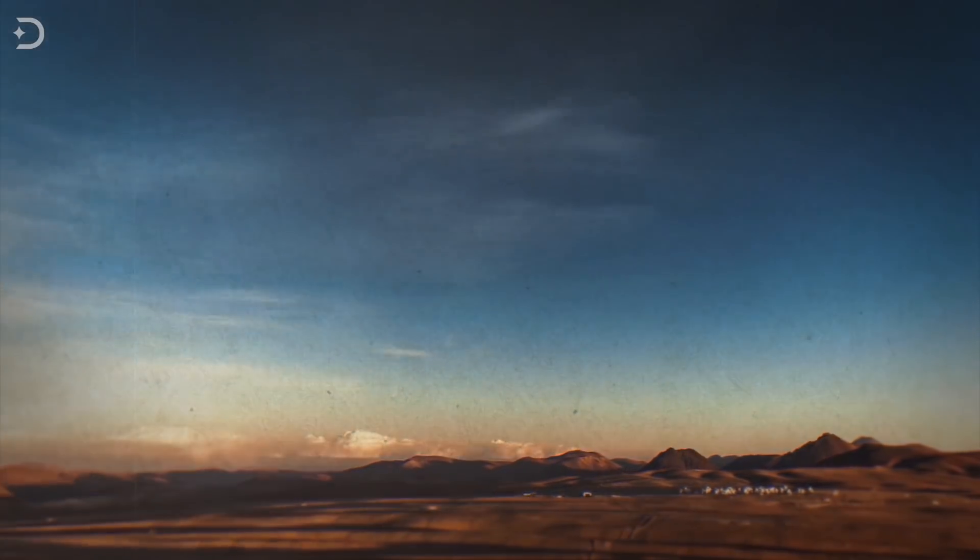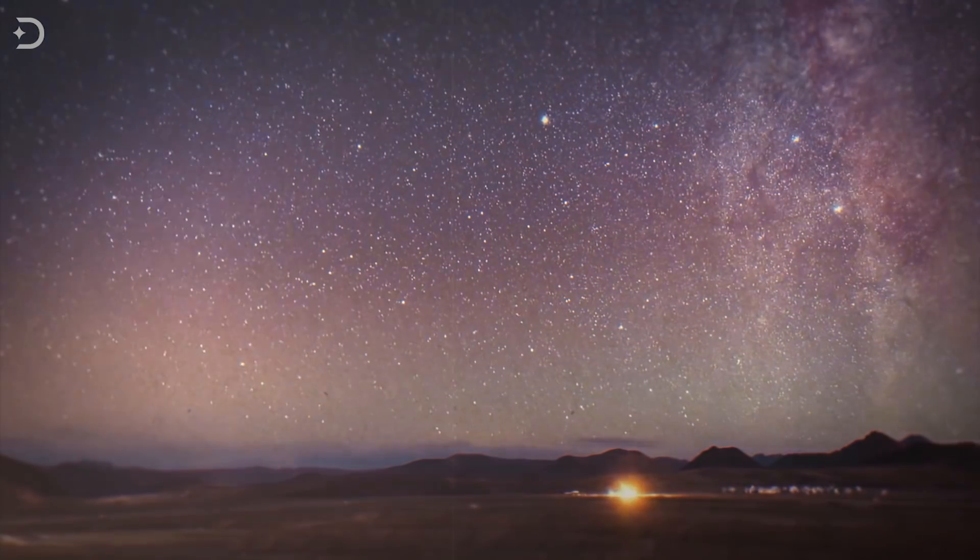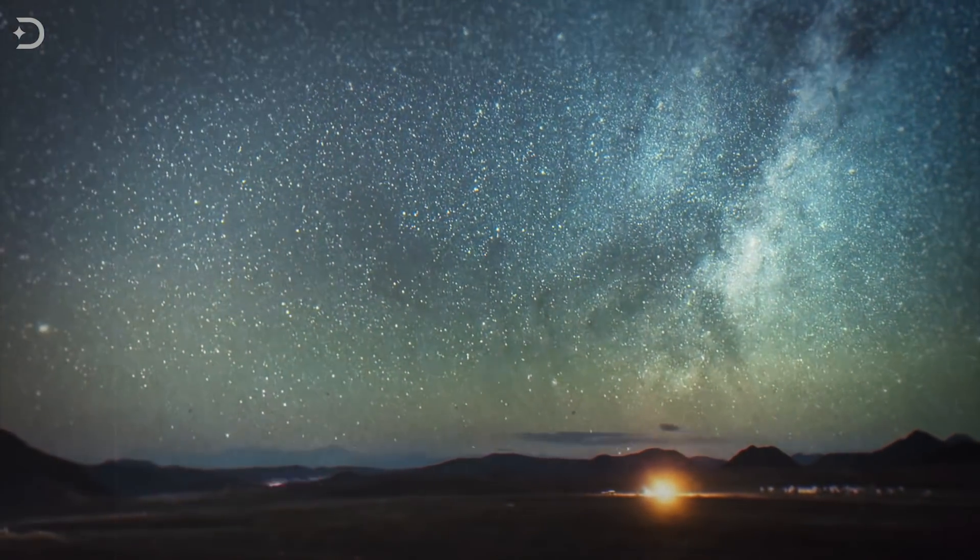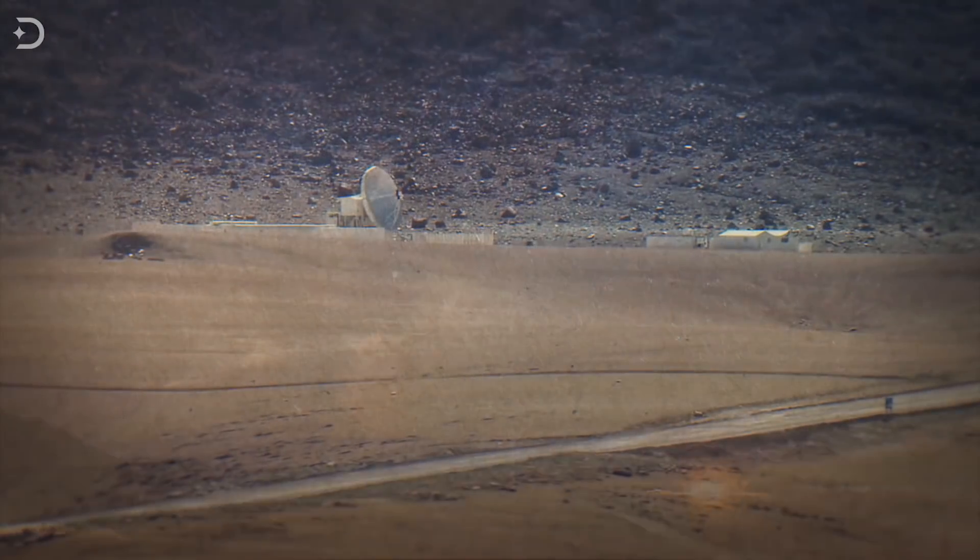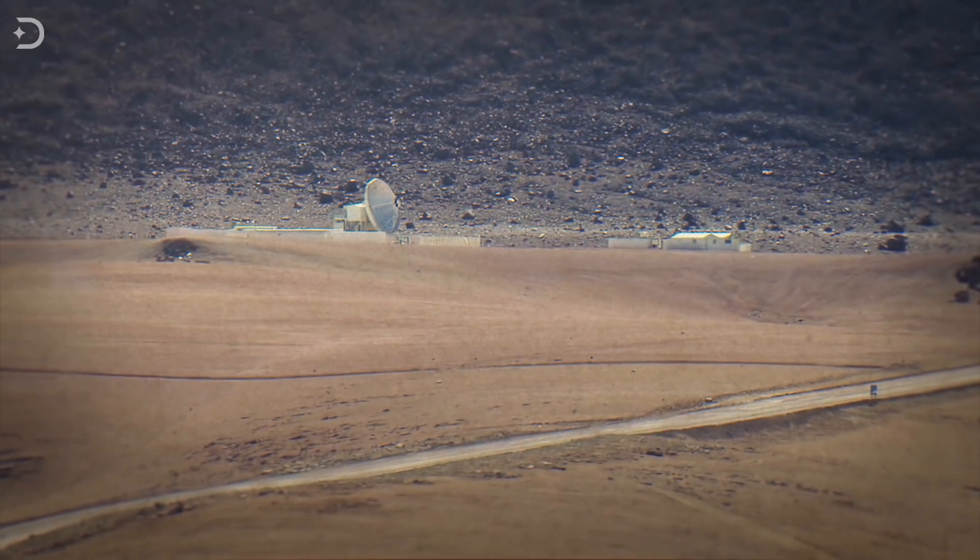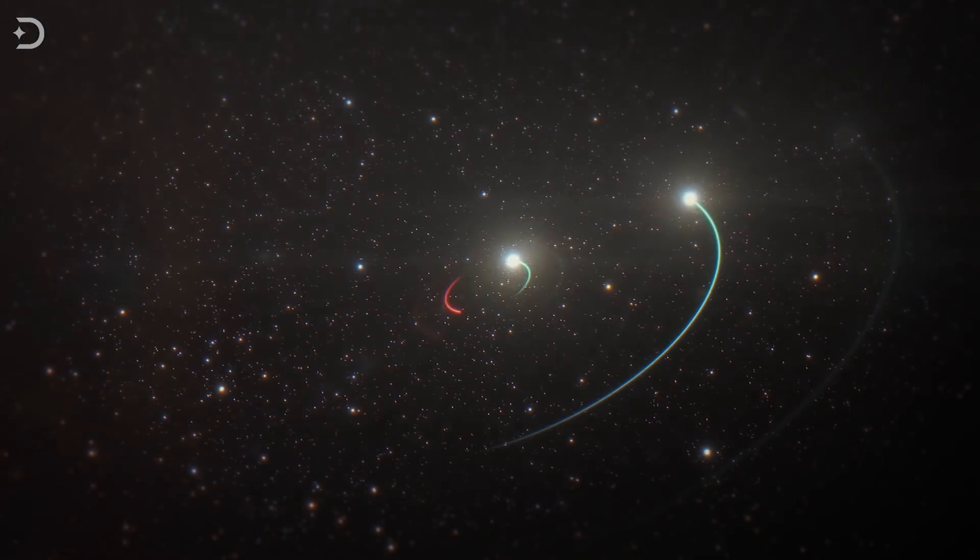This black hole might be too close for comfort. While 1,000 light years might sound distant, in cosmic distances it's very close. It's so close that you can see the star system without a telescope from the southern hemisphere on a dark, clear night with the naked eye.